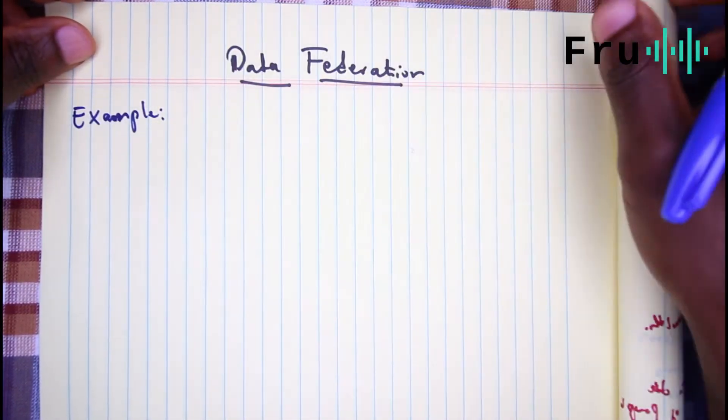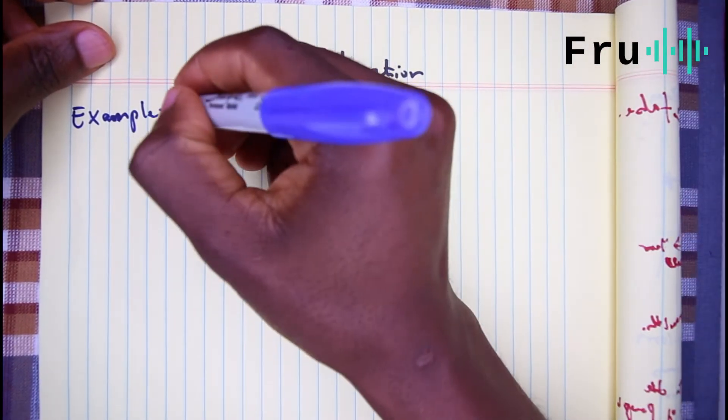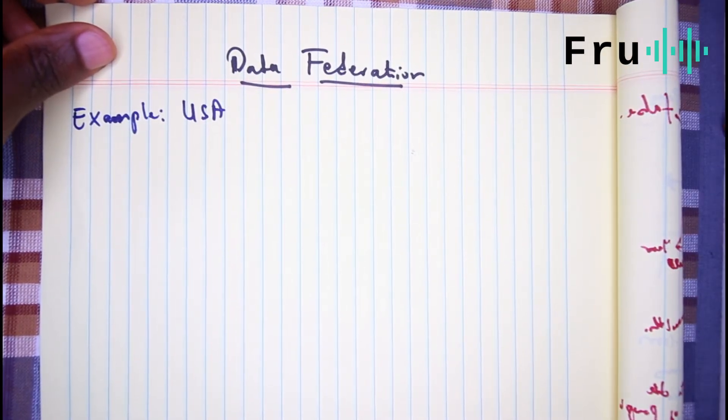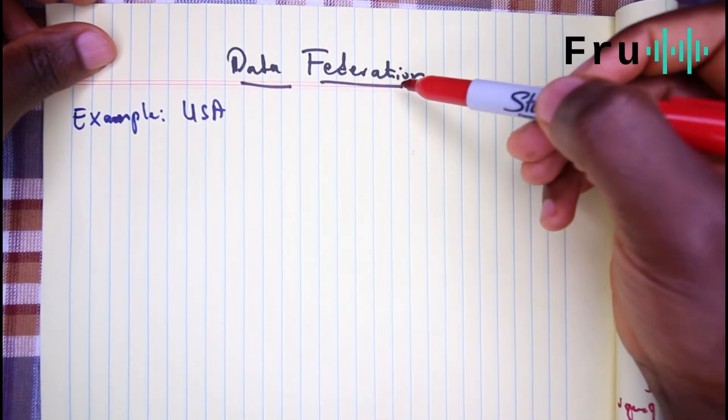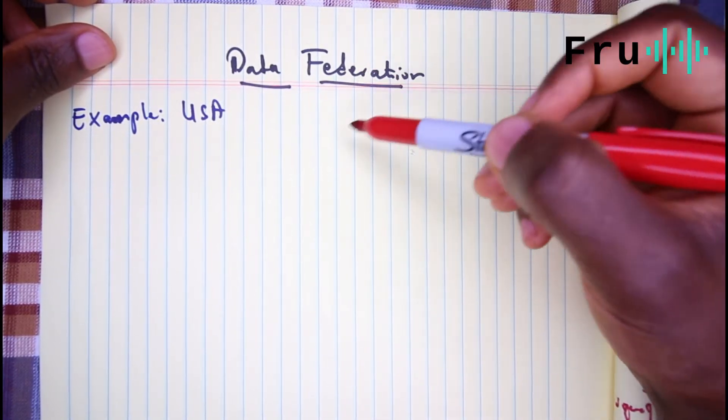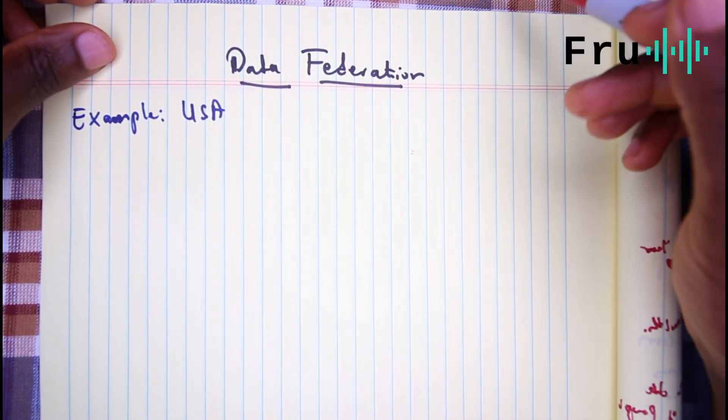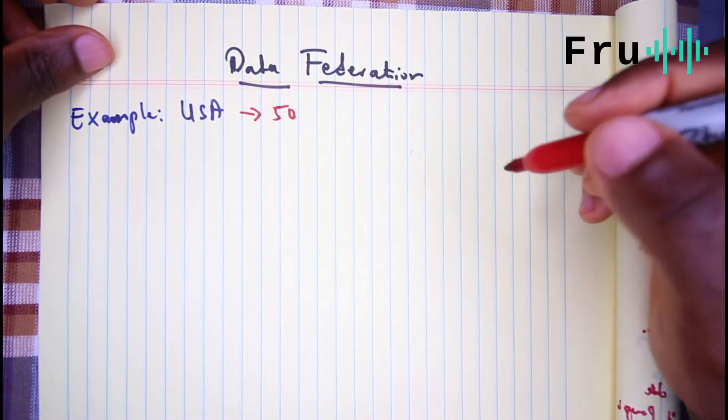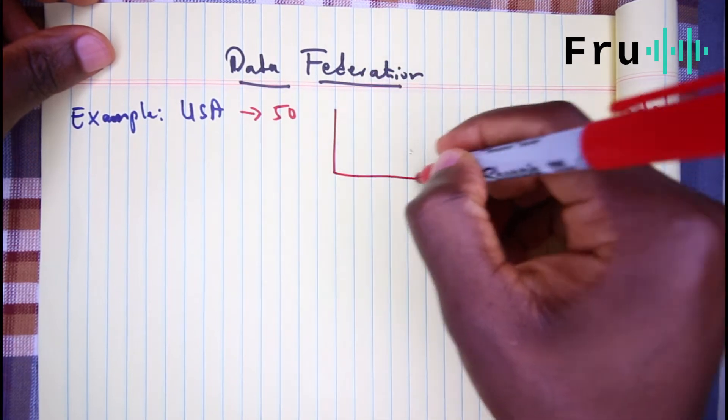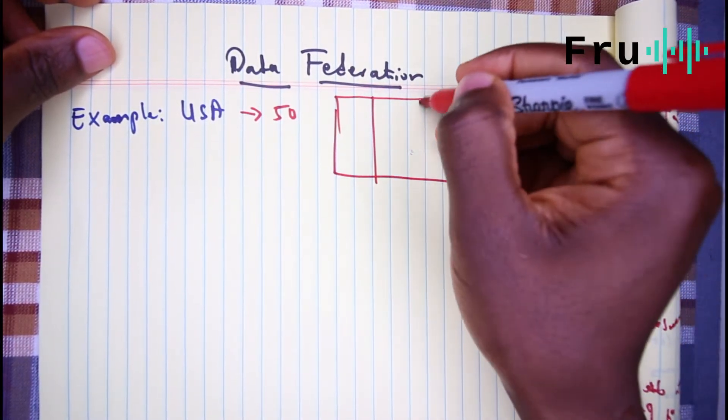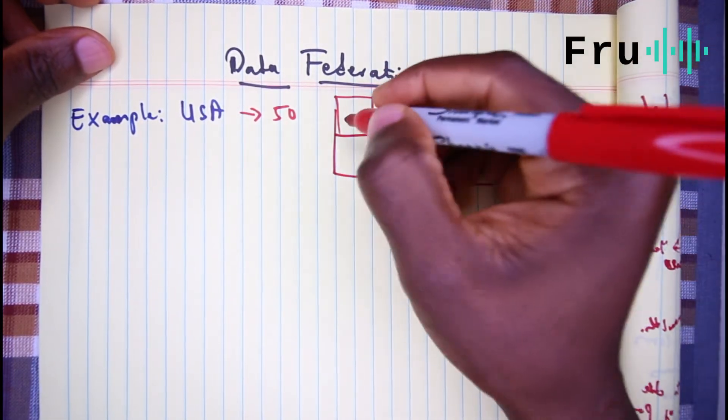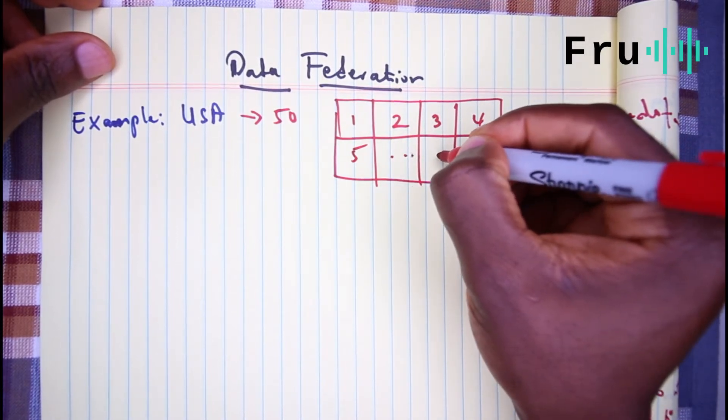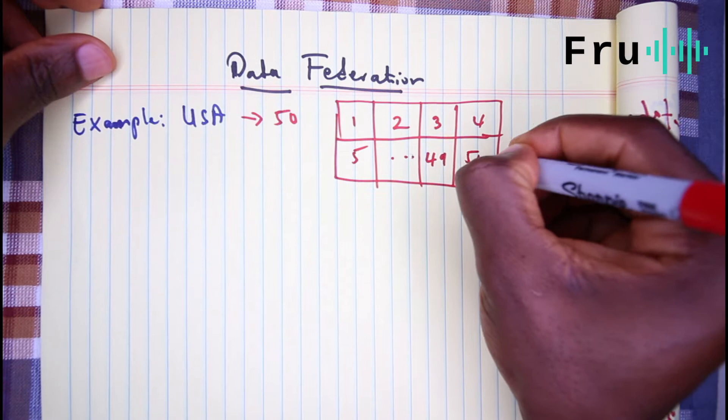Federation is something that a lot of us might be familiar with, especially if you live in the United States of America. That's one example. There are a lot of other countries in the world that will follow this idea of the federation. So if you understand what the federation is, I think logically it would make sense to understand what the data federation is. So in the United States, the United States has a bunch of states, I think about 50 and that number might change. And if you think of, let me just draw a square, assuming that these are all the states in the United States, 1, 2, 3, 4, 5, 49, 50, all the way to 50.